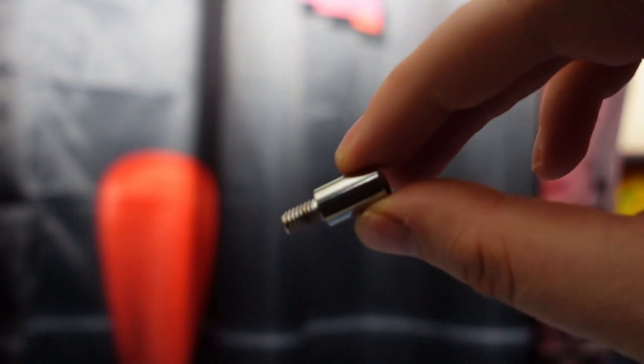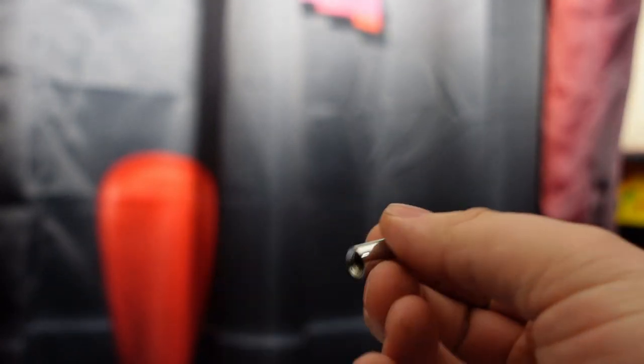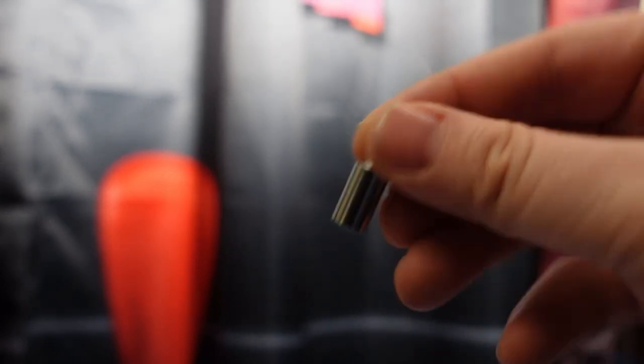For right now, I'm not changing out the joysticks. I'm going to keep the Sanwa clone joysticks that came with the unit along with the springs that came with the unit, comes with four pound springs. But I want to get a little bit more height with the bat top.